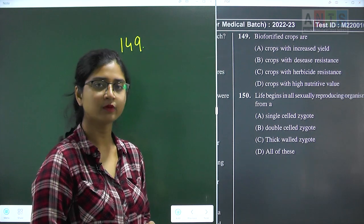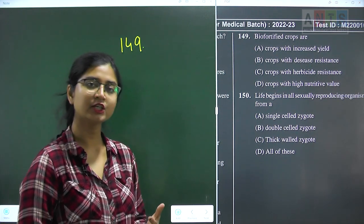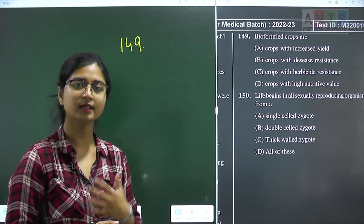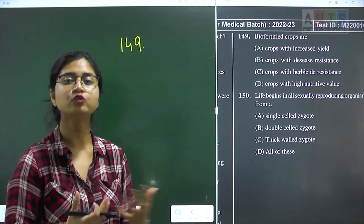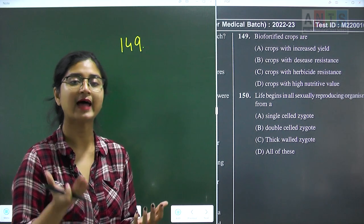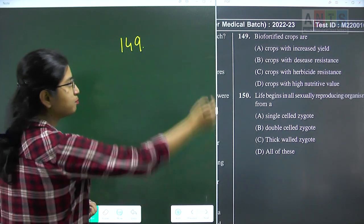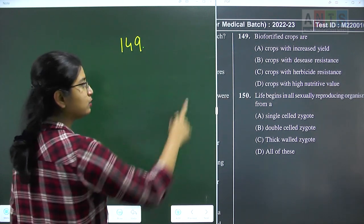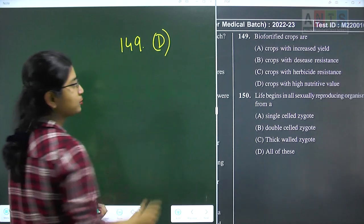Question 149: biofortified crops. Biofortification is the process of developing crops with increased nutritive value — higher vitamin, iron, and mineral content. Biofortified crops are crops with high nutritive value. Question 149 answer is option D.